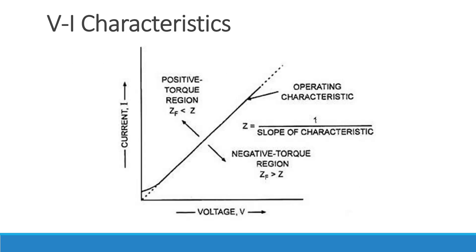Next we will observe the VI characteristics for this distance relay. On the x-axis you have the voltage and on the y-axis you have the current. The impedance is given by the straight line with a certain slope. Here you have the positive torque region, which is the region where the fault impedance is less than the setting impedance Z, and the negative torque region where the fault impedance is greater than the setting impedance Z. Whenever a fault occurs, the impedance on the line drops below the setting impedance, providing a positive torque and causing the relay to operate.